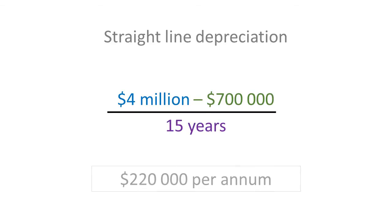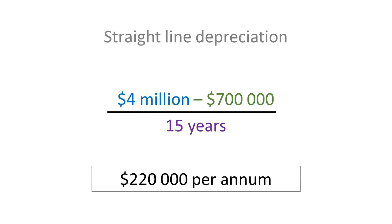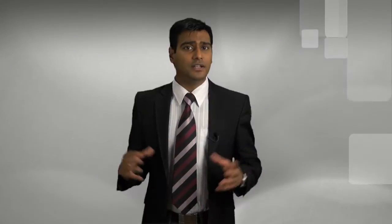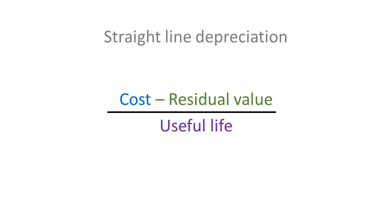This equates to 220,000 dollars of depreciation each year. For Sarah to ensure that there are high profits in the short term, she will make the depreciation expense as small as possible. There are two ways that Sarah can achieve this: first, by increasing the residual value, and second, by increasing the estimated useful life of the truck.